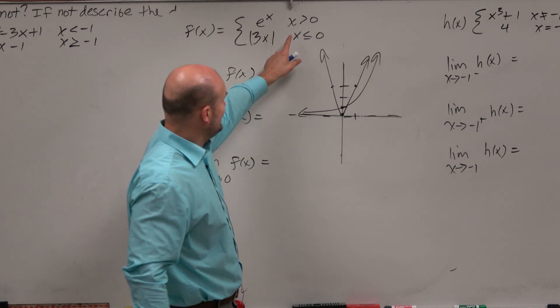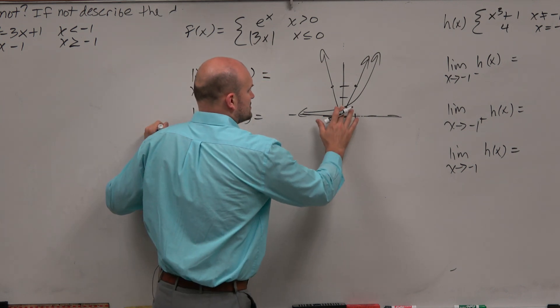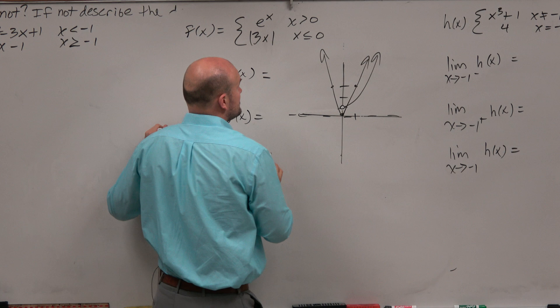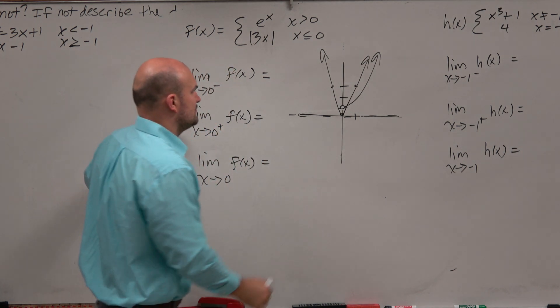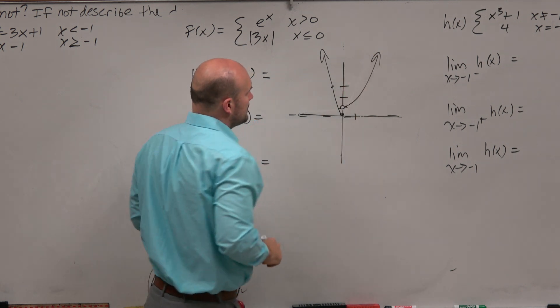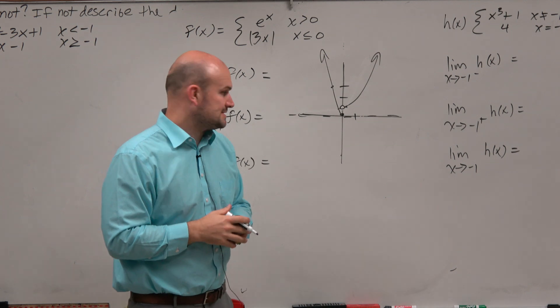Now we look at our restrictions. We say e to the x is only true for x values greater than 0. So that is whole greater than 0, everything else is erased. And the absolute value of 3x is only true for x values that are less than 0. So by looking at this piecewise function, remember last class we practiced graphing it, you should be looking at something like this.